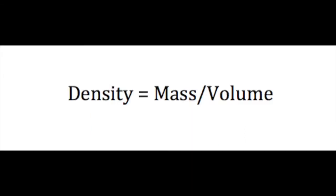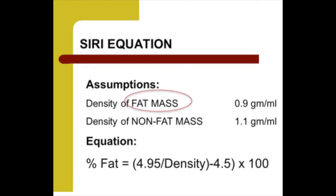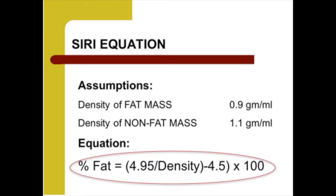After volume is determined, body density can be calculated through this simple density equation: weight divided by volume. From there, the percent fat can be determined through the Siri equation: percent fat equals 495 divided by density minus 450. This Siri equation is derived using a two-compartment model — body composition is made up of fat mass and nonfat mass. Substituting in mass divided by density for volume in the density equation, and using the known values of fat mass equals 0.9 grams per milliliter and fat-free mass equals 1.1 grams per milliliter, it eventually simplifies to the Siri equation.